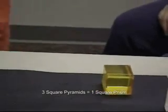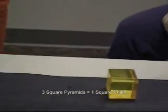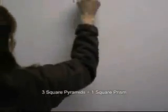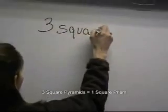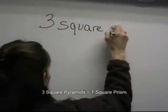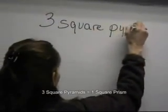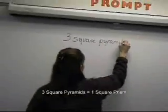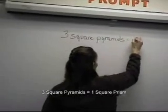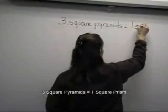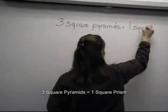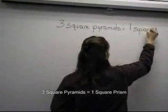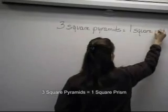So that means three square pyramids equals one square prism. Should we write that down? I think so. Three square pyramids equal one square prism.